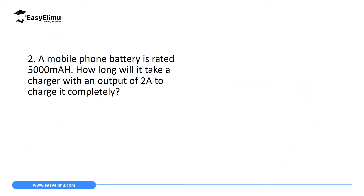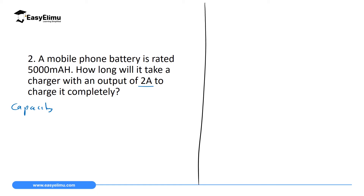Question 2 is a real-life situation involving mobile phones. A mobile phone battery is rated 5000 milliampere-hour. How long will it take a charger with an output of 2 ampere to charge it completely? We are given capacity in milliampere-hour, so we need to convert to SI units.